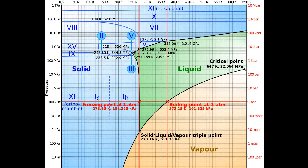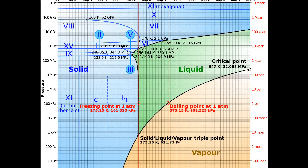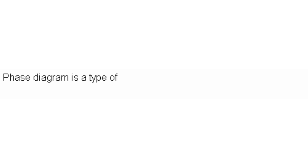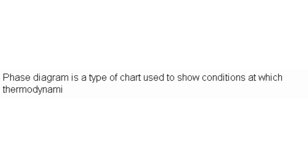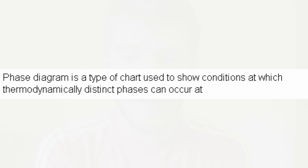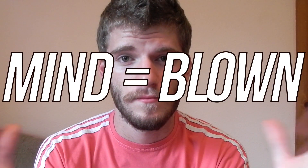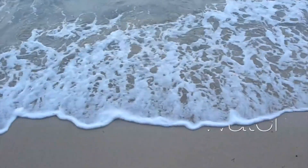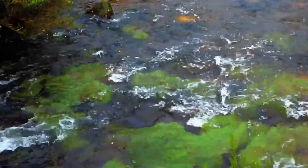This is a phase diagram of water, and it will blow your mind. A phase diagram is a type of chart used to show conditions at which thermodynamically distinct phases can occur at equilibrium. Just kidding. Water is weird, like really, really weird.